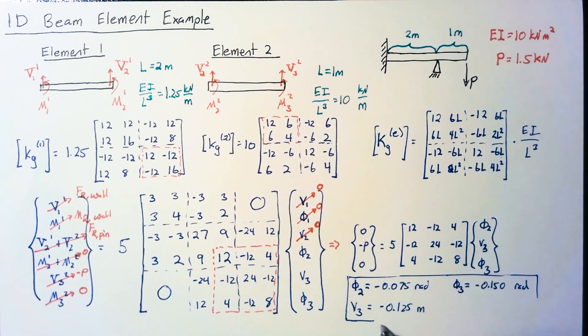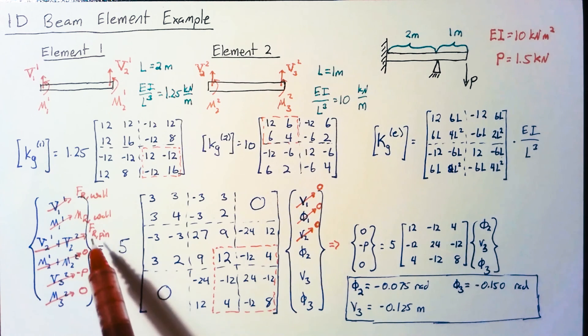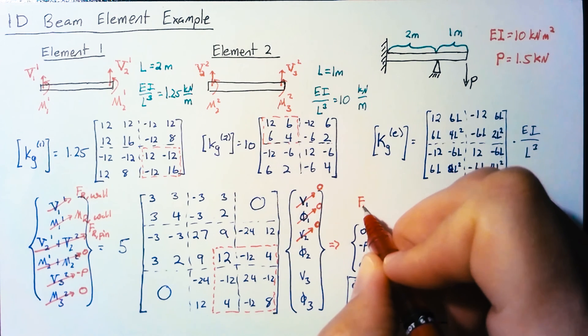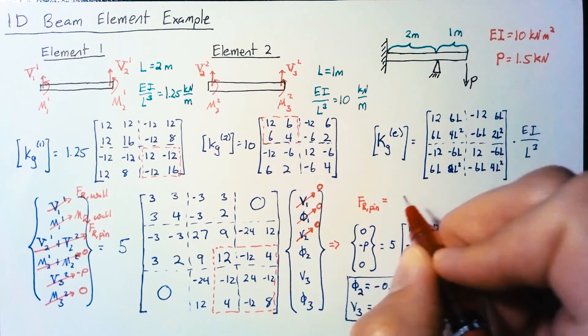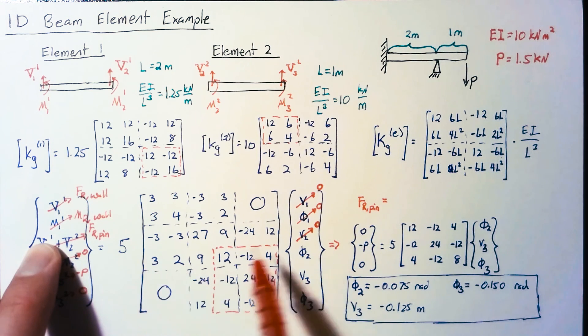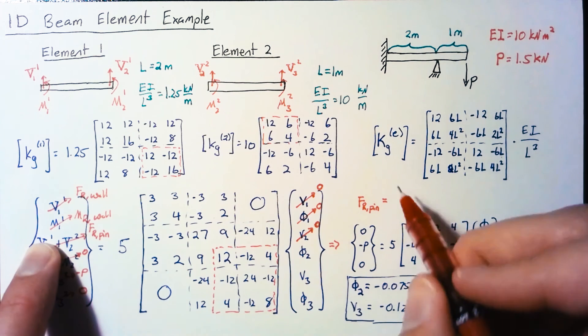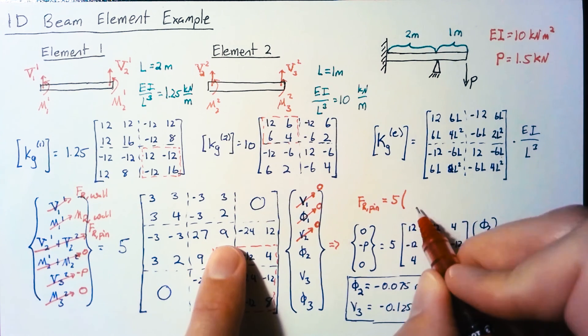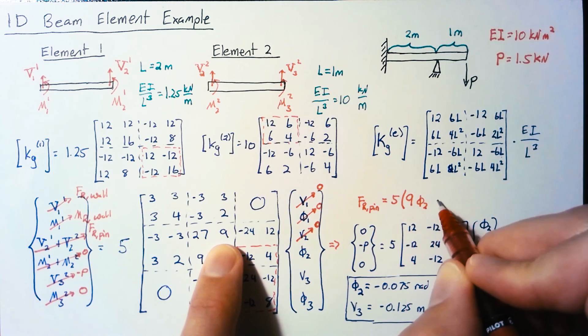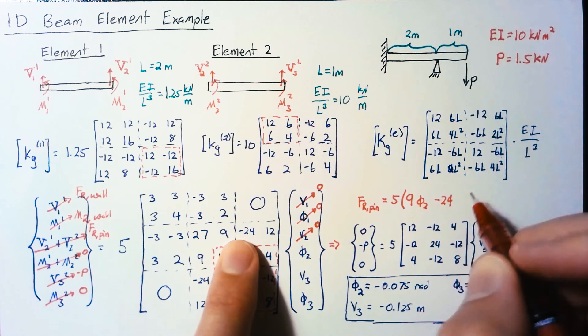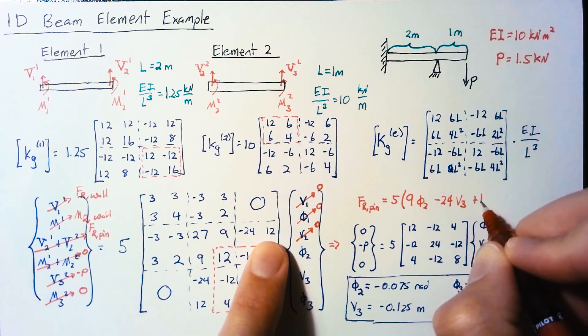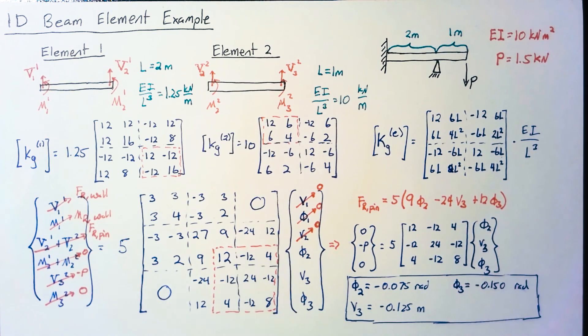This is our solution but we can go another step and figure out the reaction forces and moments. Let's look at the reaction force on the pin, which we can solve for using the third equation. We get 5 times [9φ2 - 24V3 + 12φ3], which gives us 2.625 kilonewtons.